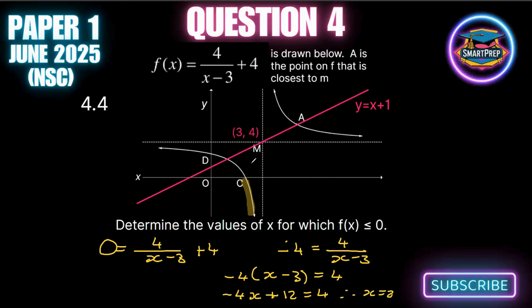Therefore x equals 2. So we know it's between 2 and 3. It can equal 2 but cannot equal 3. Why not? Because it's an asymptote and it never touches. So our final answer will be 2 is less than or equal to x which is less than 3. This is our final answer.